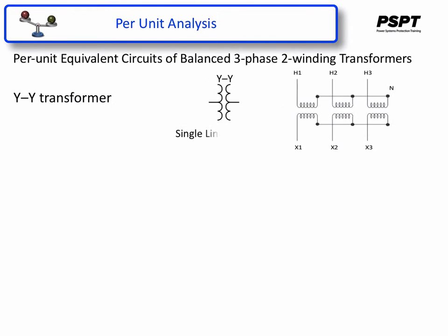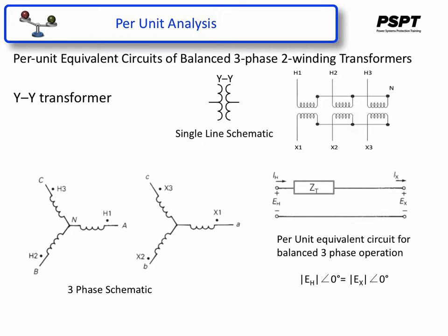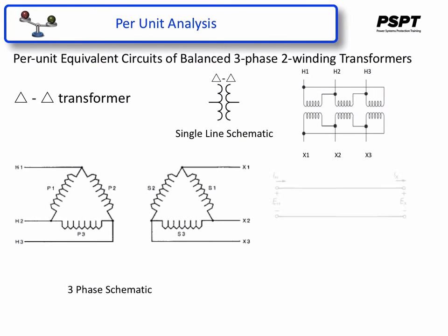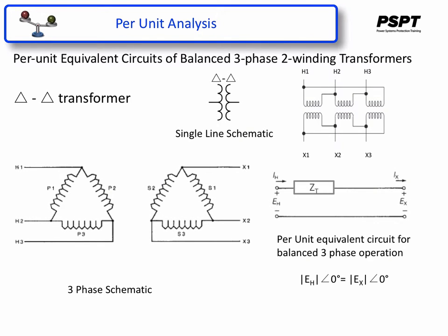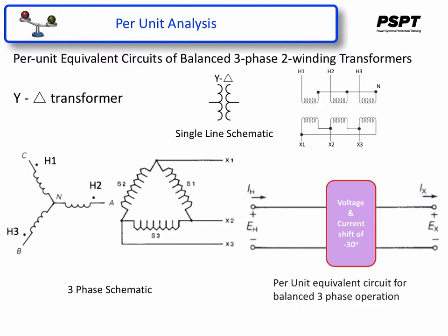I then deal with the various transformer, or at least the basic transformer configurations, and what their equivalent per-unit impedance circuit looks like and how it's dealt with. For example, you can see here how we deal with a Y-to-Y transformer. I deal with delta-to-delta transformers, and we also deal with Y-to-delta transformers, which have a little bit of a more unique process to them than the other two configurations.